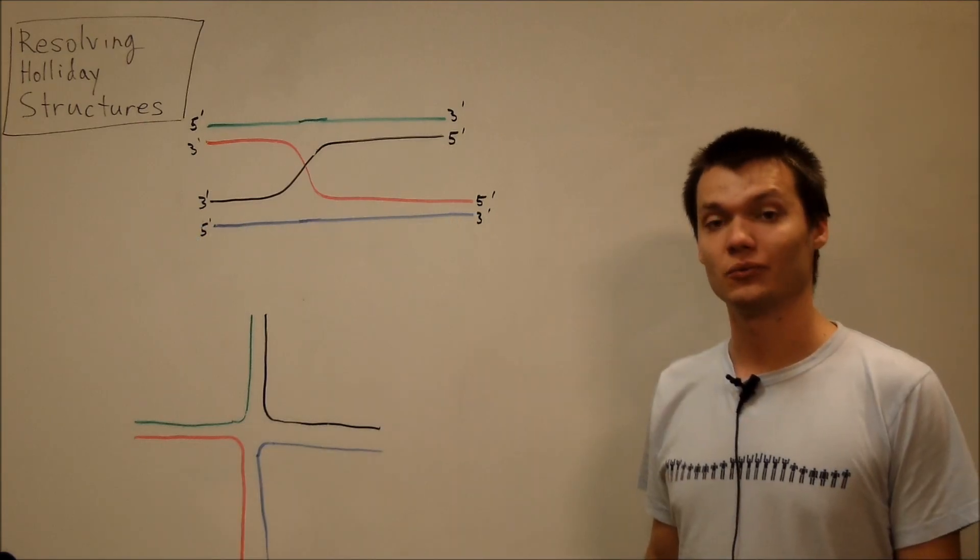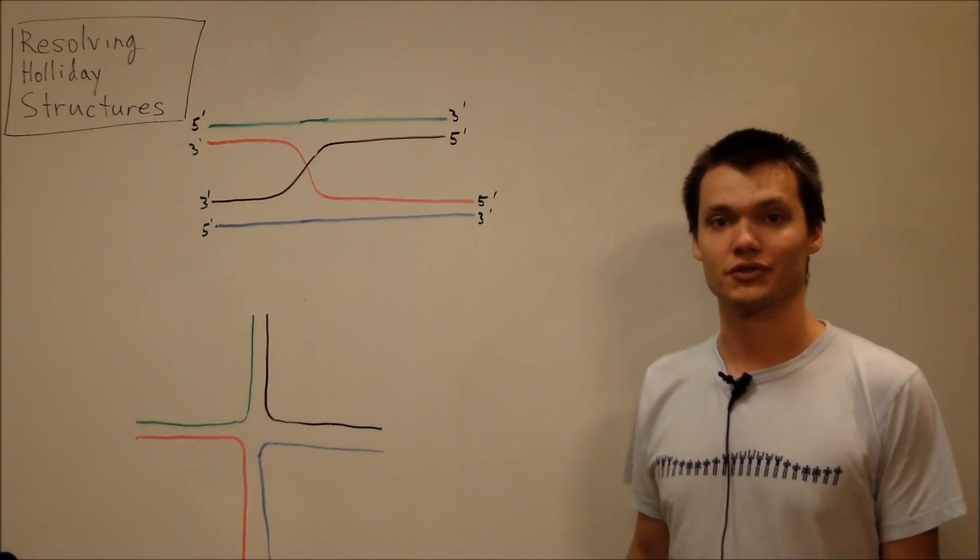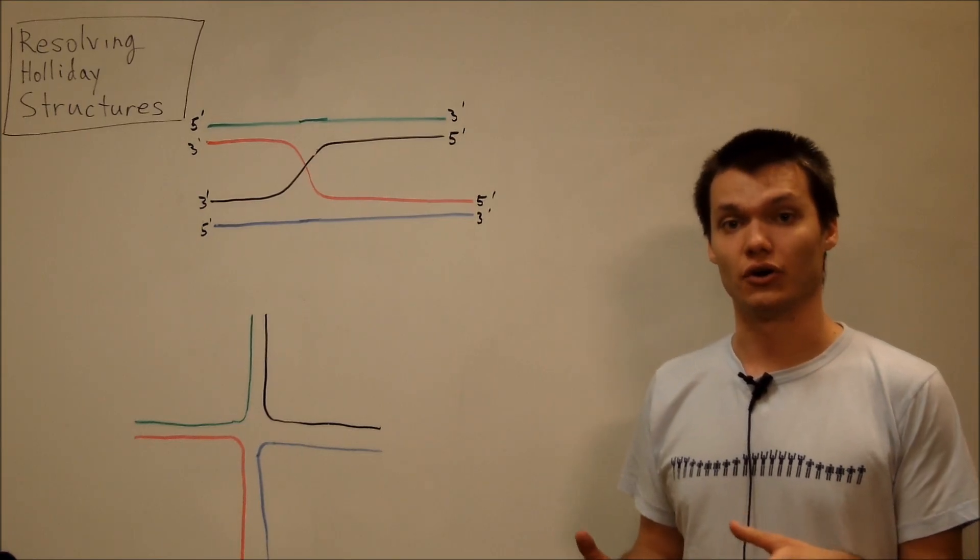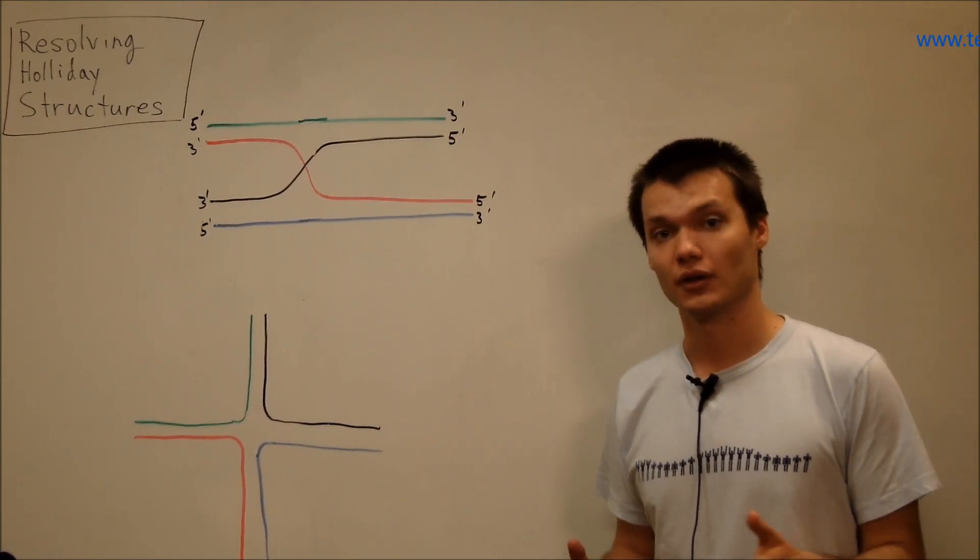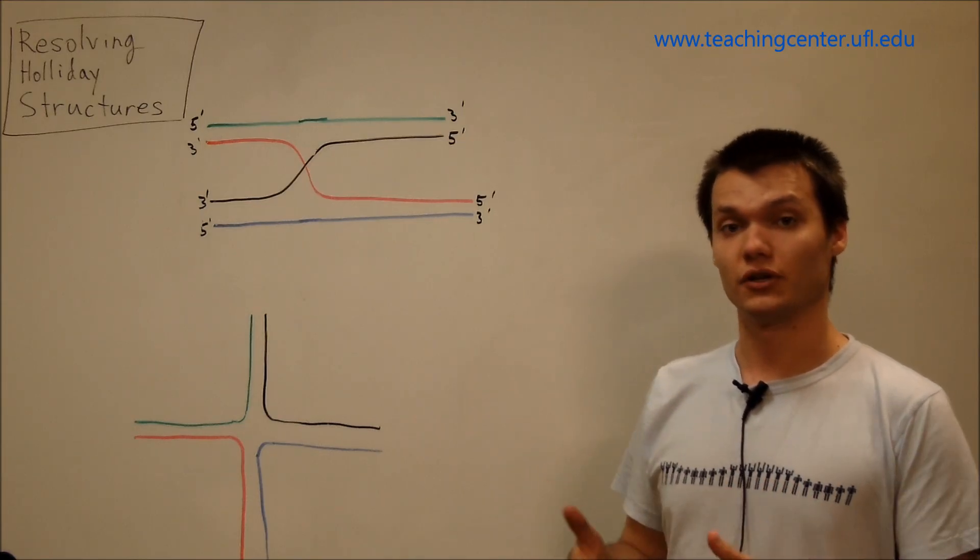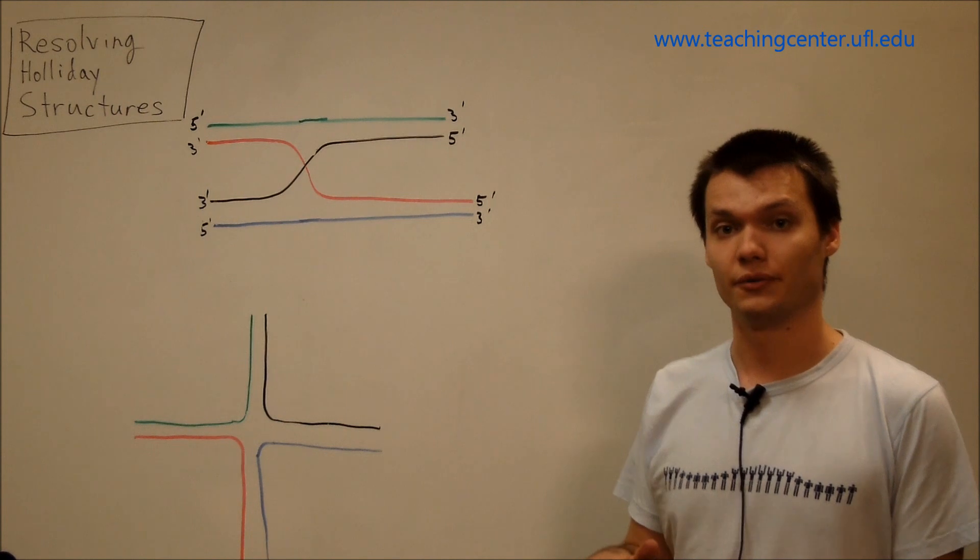I'm Nikita, and in this video, we'll go over how to resolve Holliday structures. So Holliday structures are formed when cells undergo homologous recombination, and they have to be resolved in order for the chromosomes to come apart.